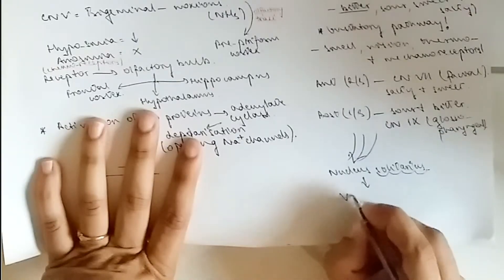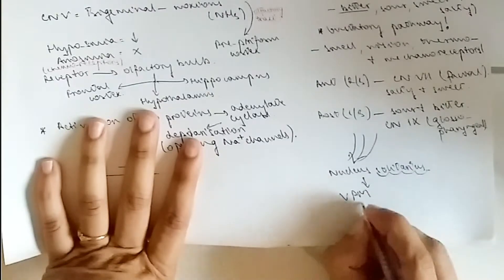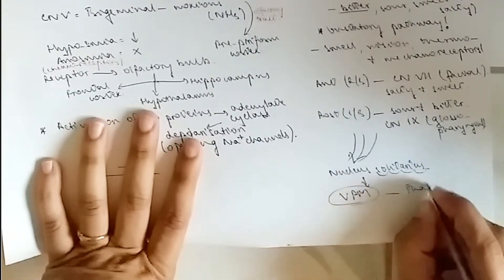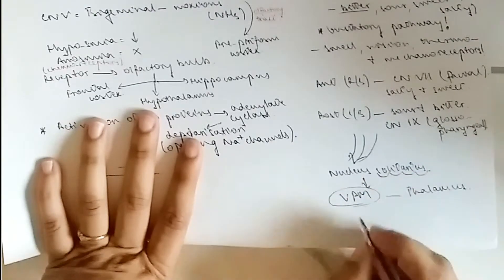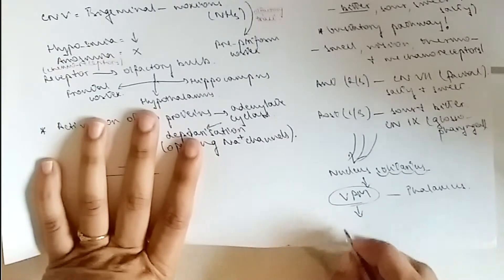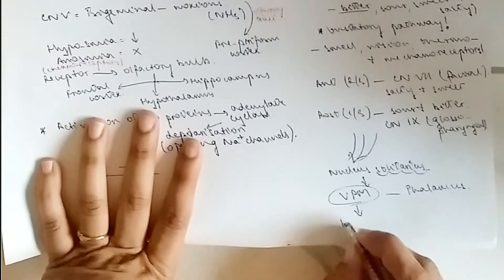From there it goes to the thalamus, to the ventral posterior medial nucleus of the thalamus, and by the insular to the gustatory cortex, which is obviously in the cerebrum. That would be your gustatory pathway.